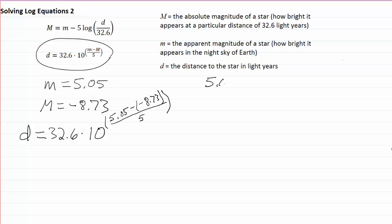First of all, 5.05 minus a negative 8.73 is going to be 5.05 plus 8.73, and that will equal 13.78. And then the other part of our exponent is taking that 13.78 and dividing by 5. And when we do that, 2.756. I can actually keep four significant figures on here because that 5 is an exact integer actually.